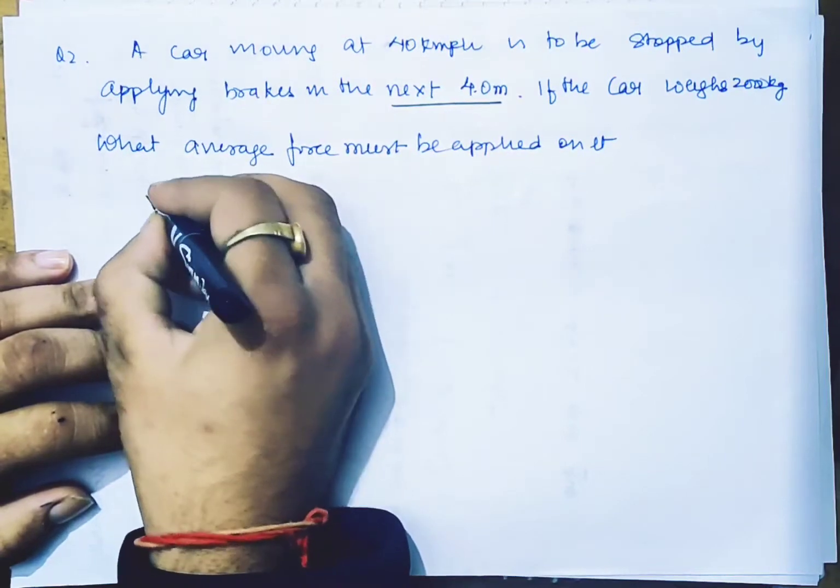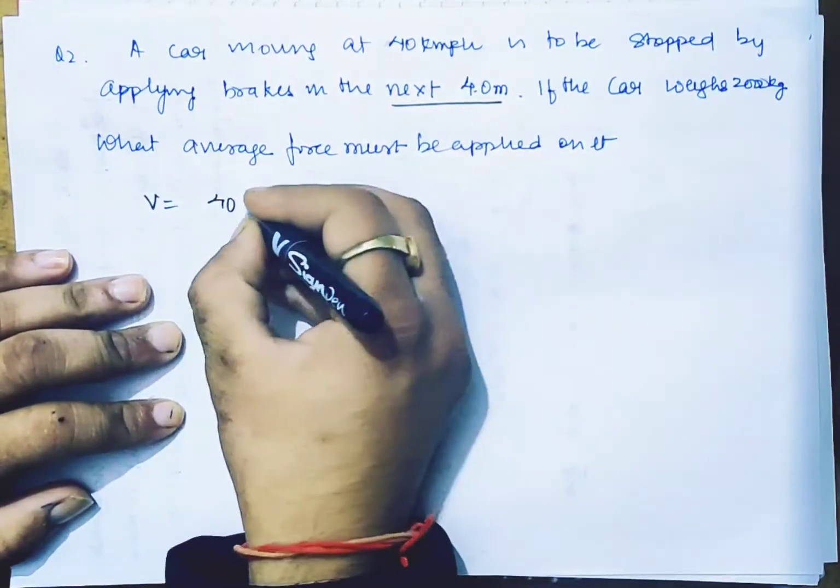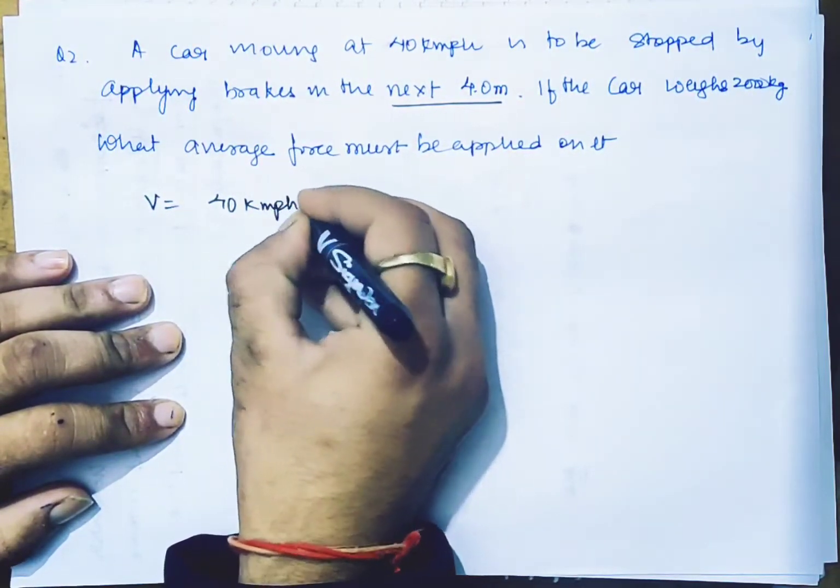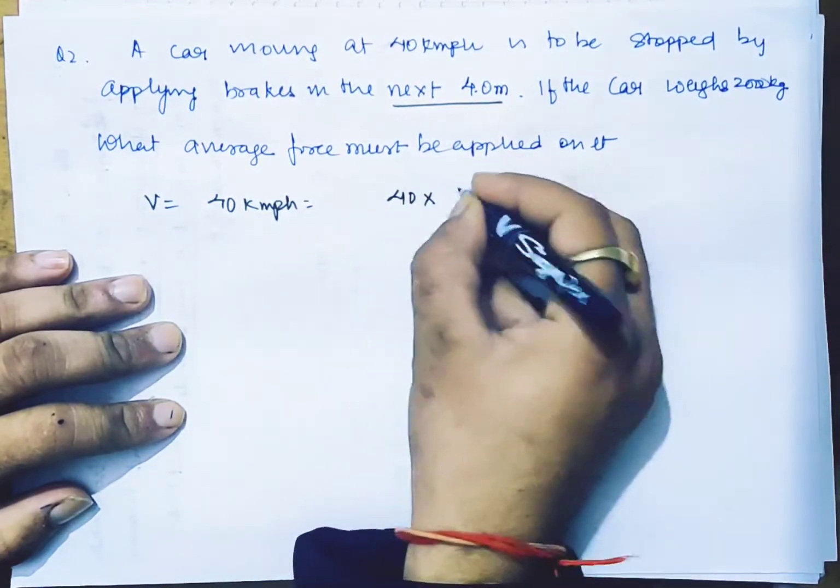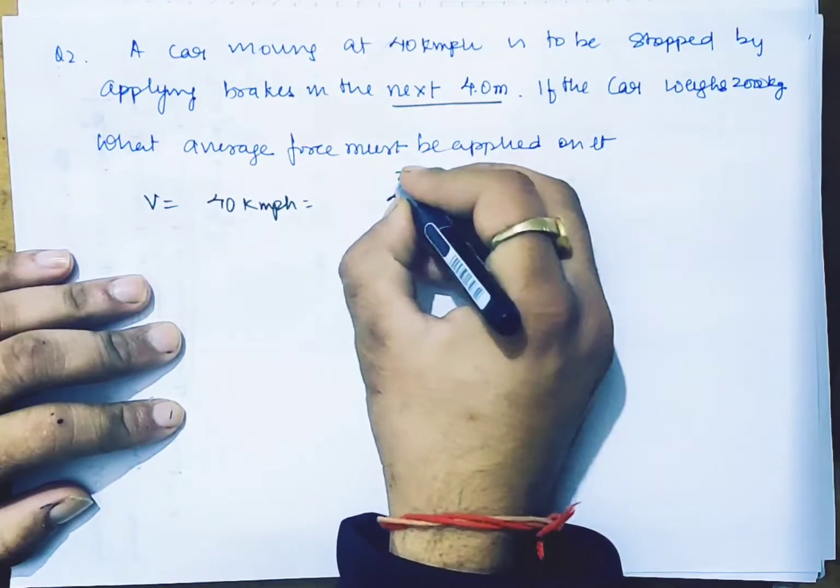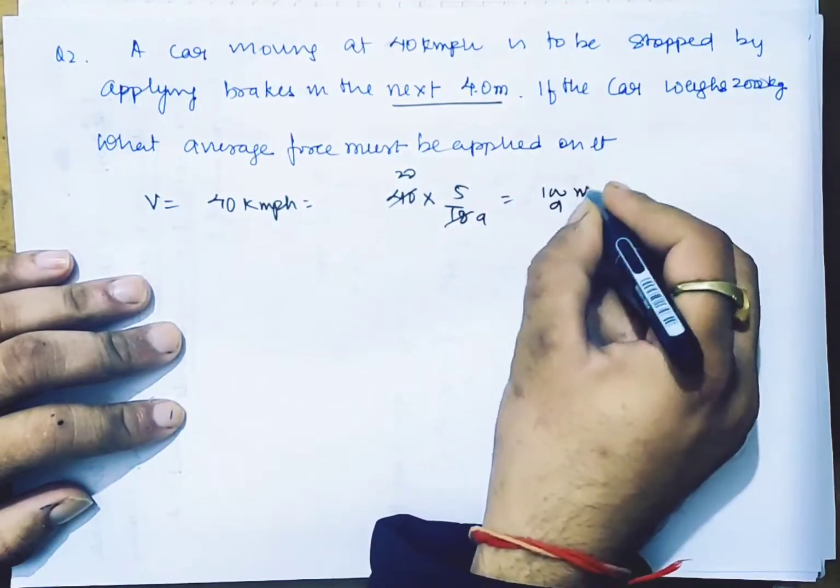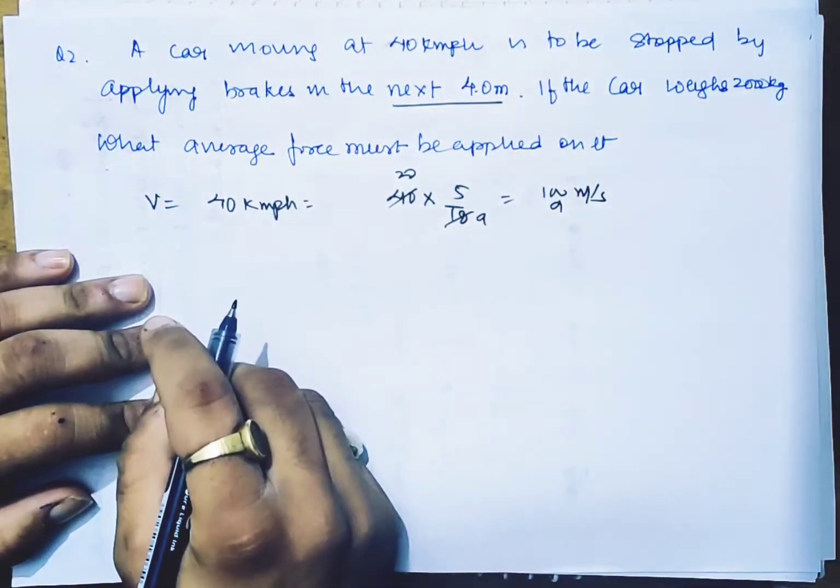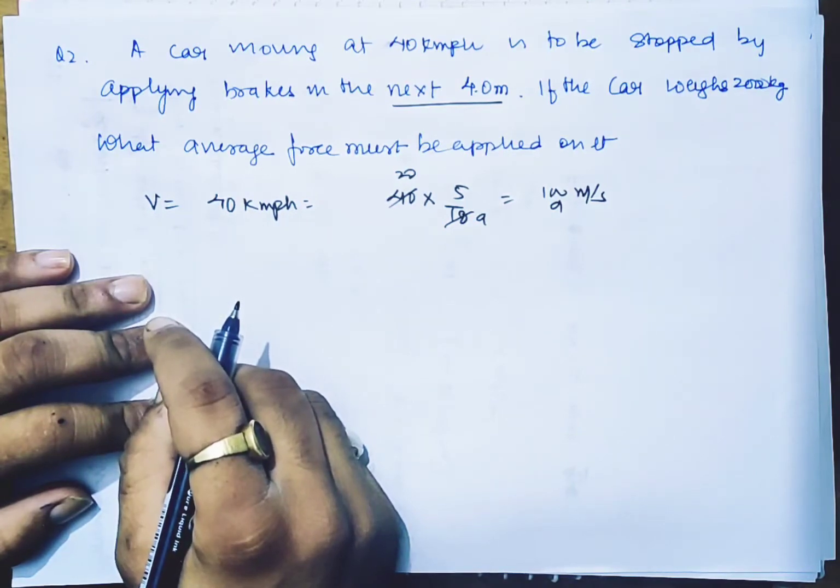So the car's initial speed was 40 km per hour. We should change it: 40 times 5 by 18 meters per second, that is 100 by 9 meters per second. It is stopped by applying brakes in the next 4 meters.